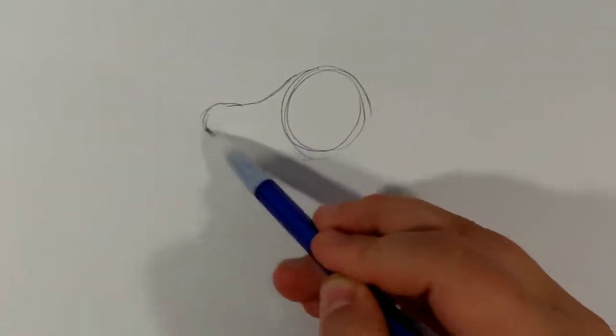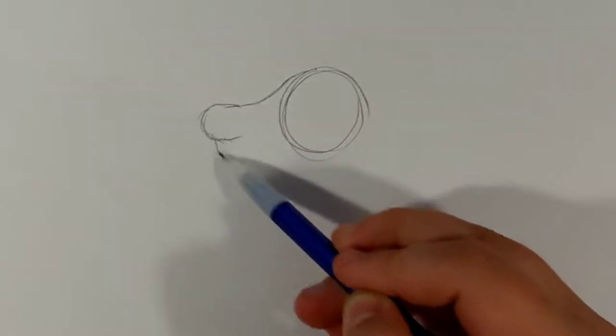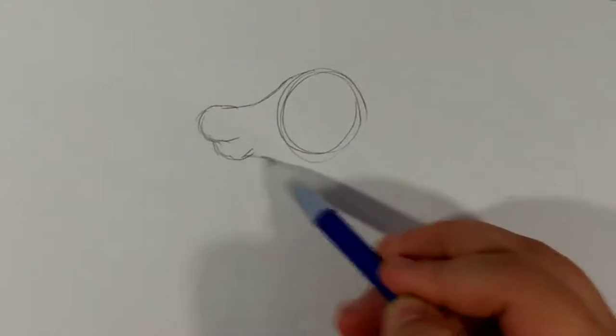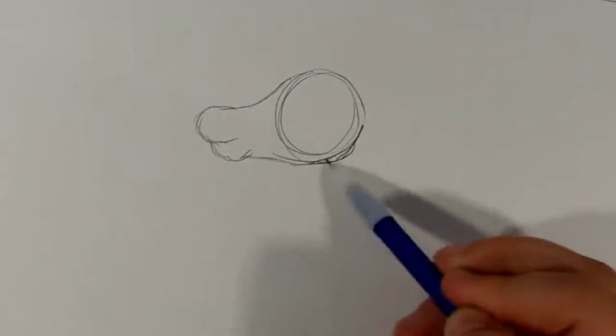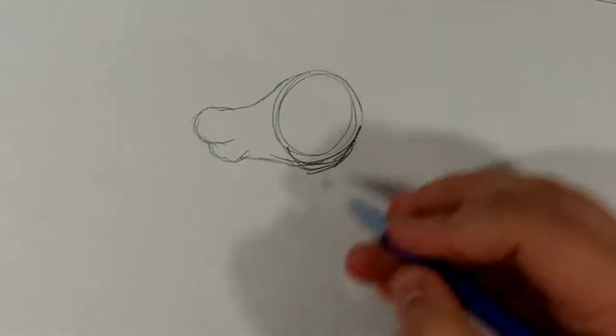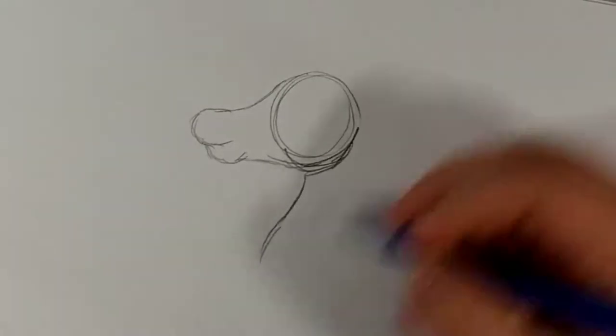You can adjust the lines however you want, depending on what kind of horse you want to draw. And then we have the jaw and the nose. That's technically the chin of the horse, sorry.